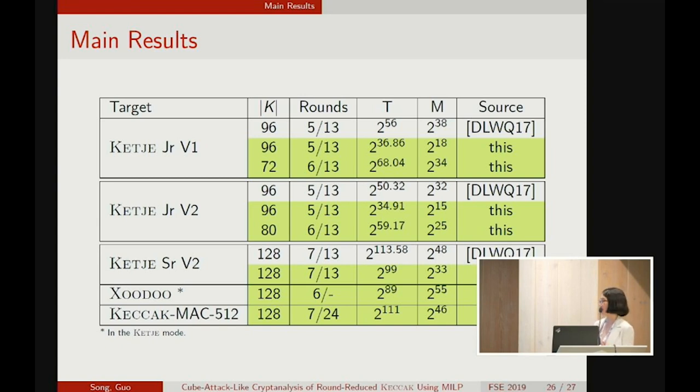And for XOODOO in KECCAK mode, six rounds can be attacked. Compared with this version, with the senior, KECCAK-senior, one round less can be attacked. We feel that XOODOO has a good resistance against such type of attacks. We also have seven round attacks against the largest version of KECCAK-MAC.